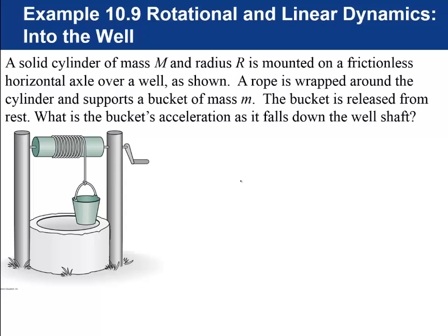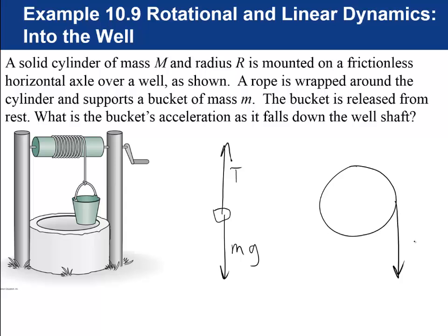The next example, 10.9, is called 'Into the Well' — a solid cylinder connected by a rope wrapped around it to a bucket falling down a well. I won't work through it here, but it's a good one: you have two objects, one with linear acceleration and one with rotational acceleration, each requiring its own free body diagram. I would definitely try that if you have a chance — otherwise, I'll see you in class.